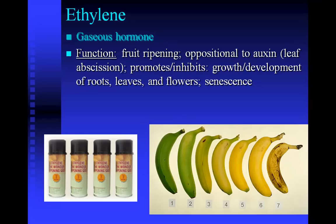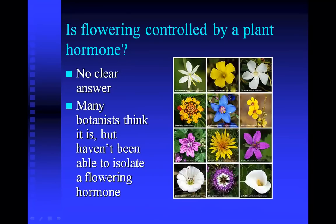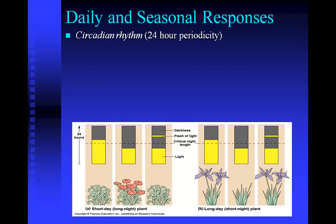Scientists have long debated whether flowering is controlled by a plant hormone, and there's no clear answer. Many botanists think it is, but after decades of trying to isolate a flowering hormone, they haven't found one. Two things known to influence flowering are circadian rhythms and phytochromes. Just like animals, some plants have a circadian rhythm, especially regarding the flowering response. Phytochromes are pigments in the plant — similar to chlorophyll — that can sense the amount of light in a certain region of the visible spectrum, and somehow that sends a signal to the plant about when to flower.